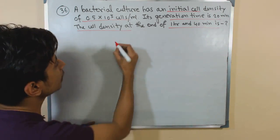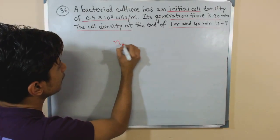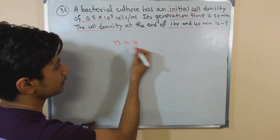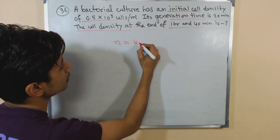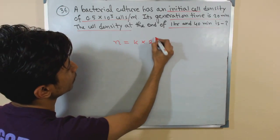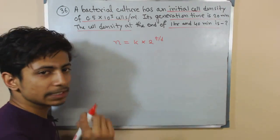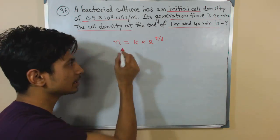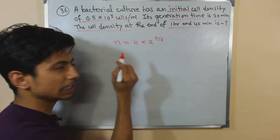So you know several different parameters and incorporate those parameter values in a formula. Remember that formula: n equals to K into 2 to the power T by D. That is the formula and I have told you to bring this formula in your mind.